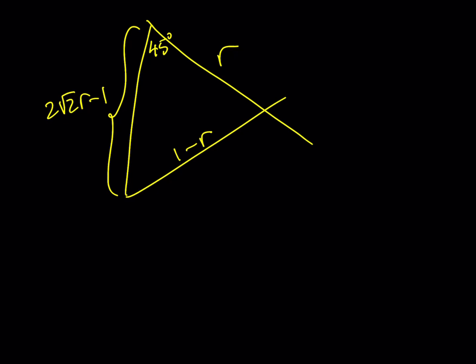The law of cosines gives you a relationship between three side lengths and one angle in any triangle. We're going to use it here. There is another method — you could drop the height to form a 45-45-90 triangle, divide the hypotenuse by √2, subtract from R, and use the Pythagorean theorem. But I'd like to use the law of cosines because it's fun.